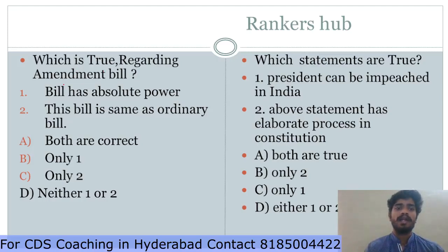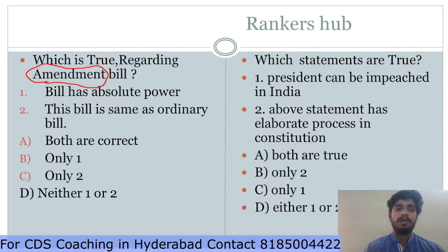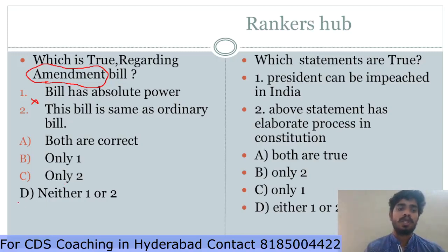Which is true regarding the Amendment Bill? To tackle this kind of question you must know what is an amendment. The bill does not have absolute power — in a democracy no power is absolute, so option one is incorrect. This bill is not the same as an ordinary bill: an ordinary bill requires a simple majority, while an amendment bill requires a majority in both houses. So the answer is D — neither one nor two.